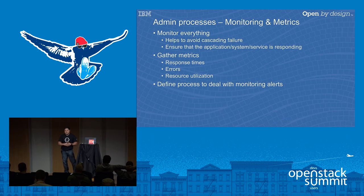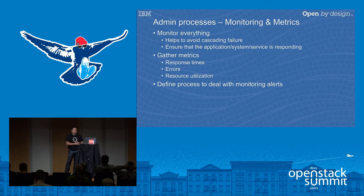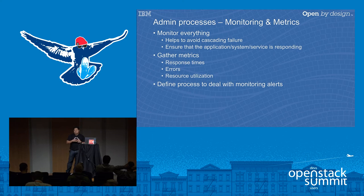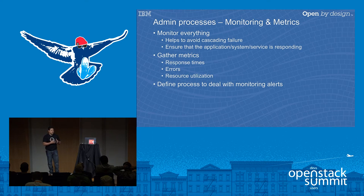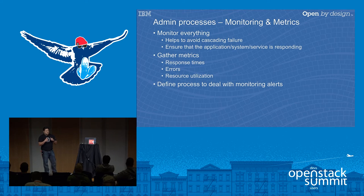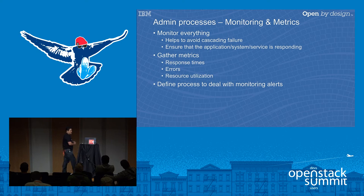Monitoring also helps avoid cascading failures. One service may impact another service, and at the end the user only sees that your application is not working. Ensuring that the health and life cycle of the various services consumed by your application is very important. Metrics help identify the health of the app — things like response times for users interacting with your application. The amount of resources these applications consume helps operators and developers increase resources as needed before the end user sees any issues.